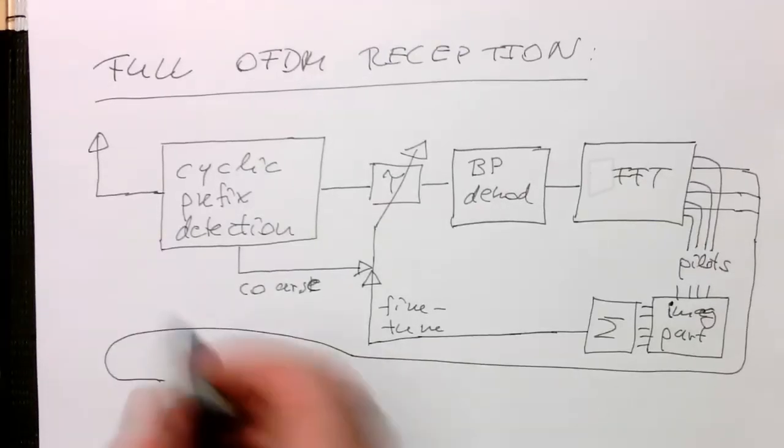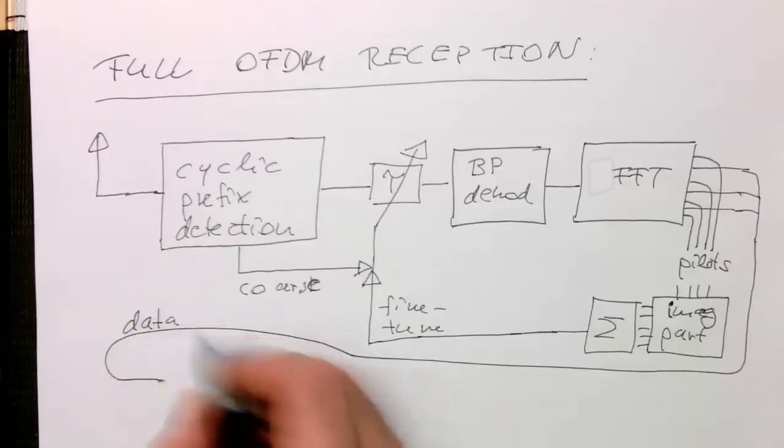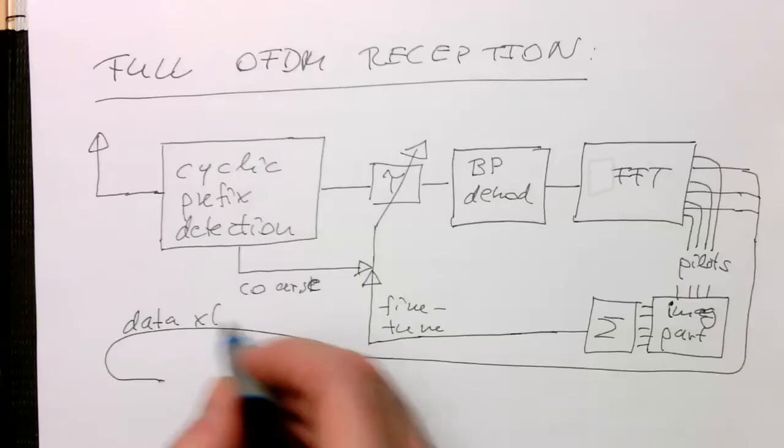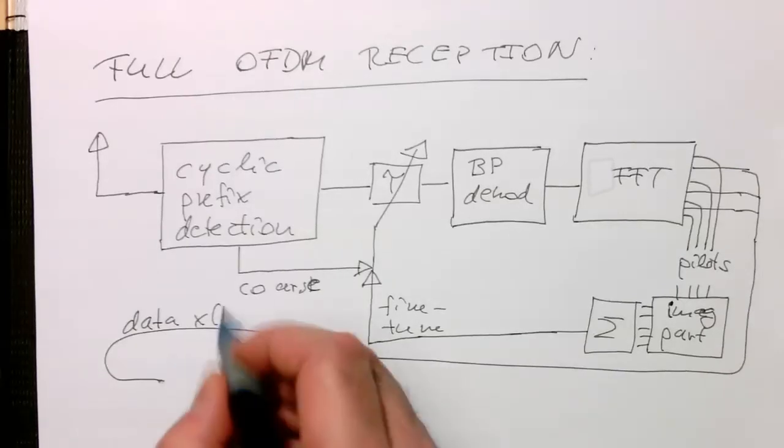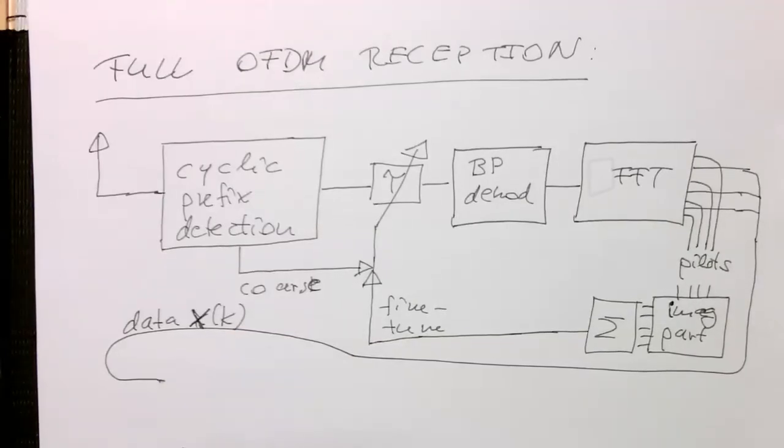And so that's our data in forms of X of K. So it draws always as a capital X, X of K here.